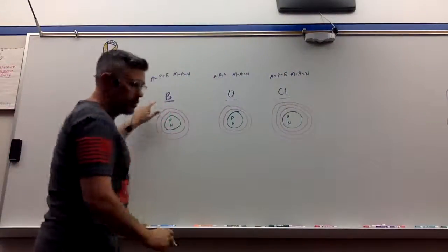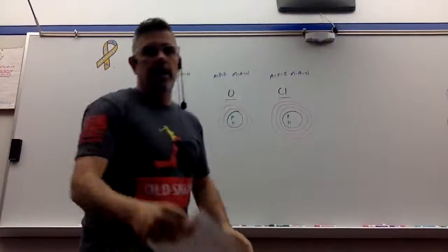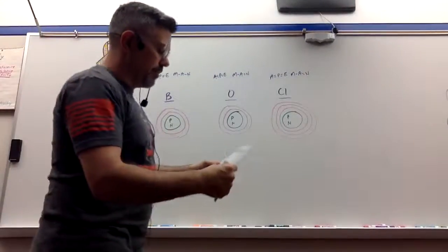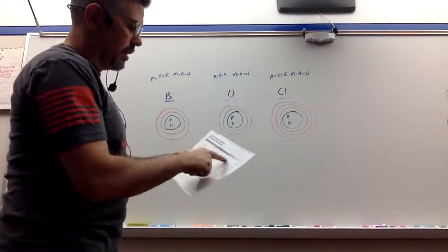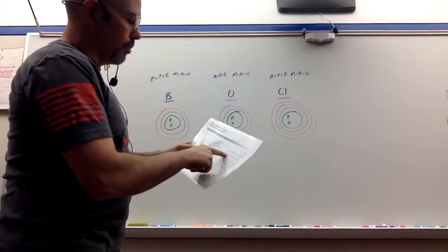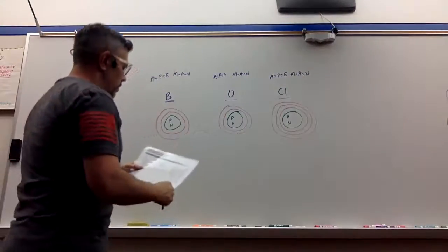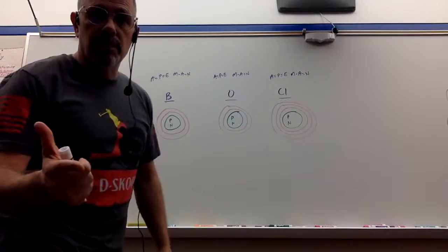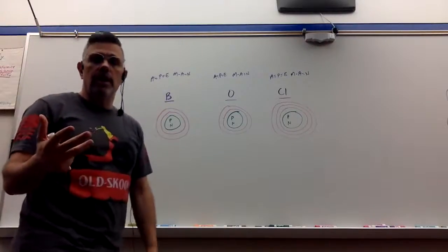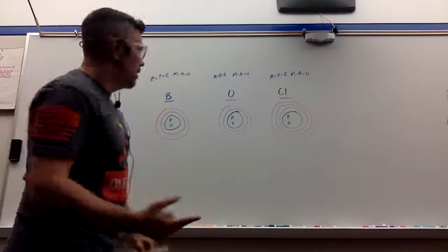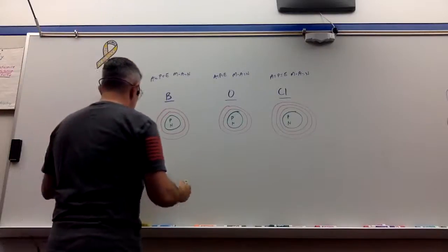So first, let's look at Boron. I've got my handy-dandy periodic table here. I'm going to look at Boron, and I'm going to find out that it is in group three, row two. So the first thing we need to do is get some information. So we need to go ahead and ape-man this element.